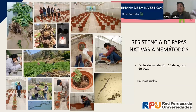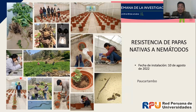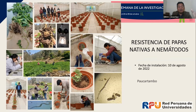También tenemos el objetivo de evaluar resistencia a Globodera, un nematodo. Hemos identificado campos en la región Pasco fuertemente atacados por Globodera. Nos capacitamos en la Universidad Agraria en el aislamiento de nematodos y quistes. En cada macetero colocamos 20 quistes; los huevos eclosionan, salen las larvas, infectan la raíz y producen nódulos. Con esa metodología estamos evaluando la resistencia de papas nativas al nematodo Globodera.